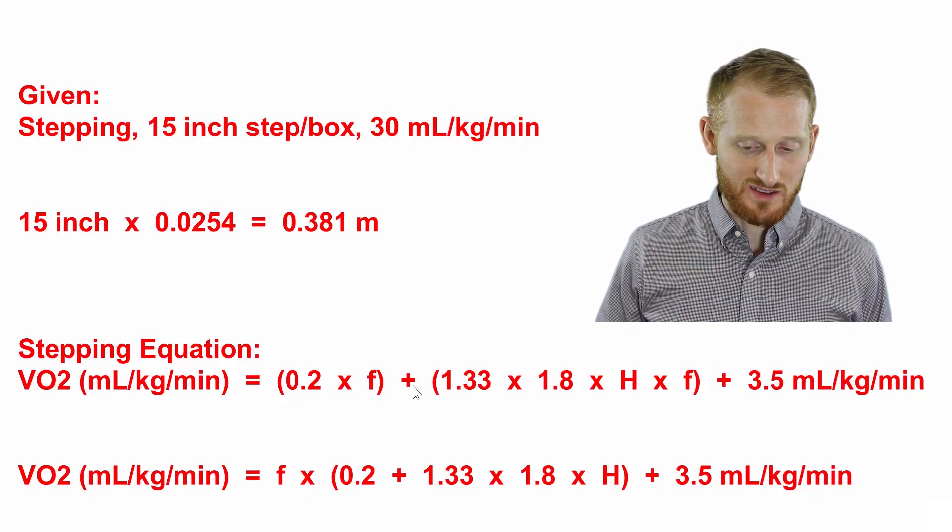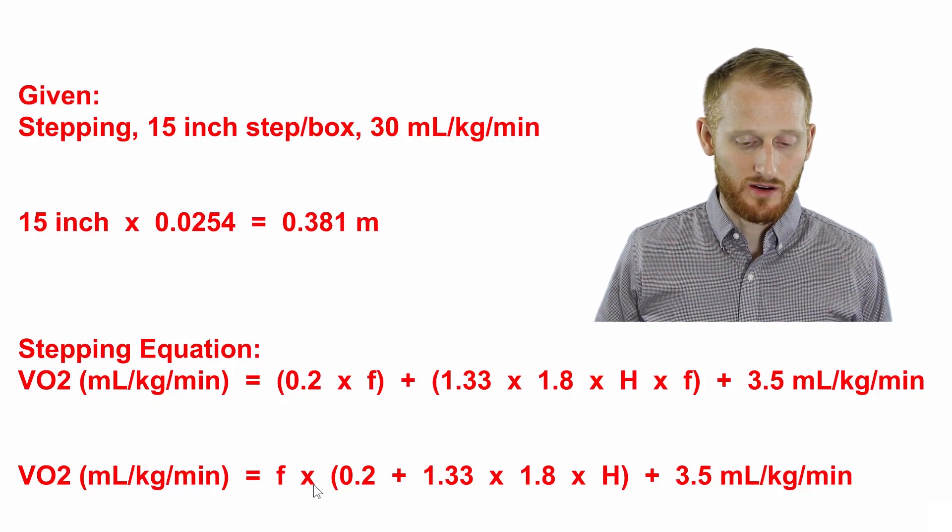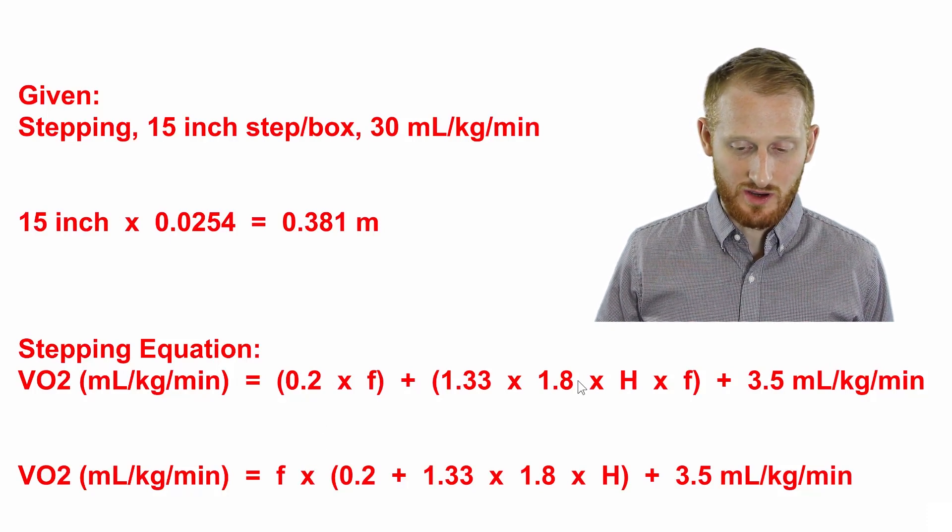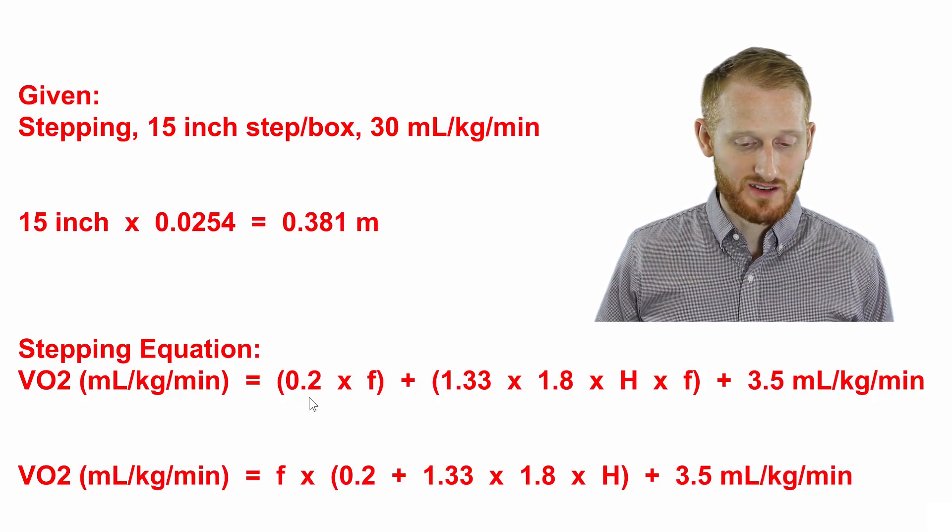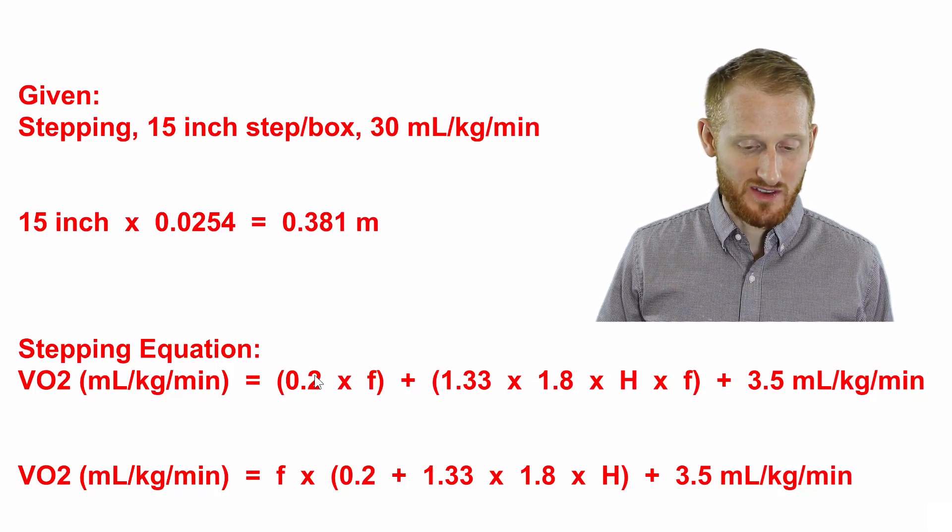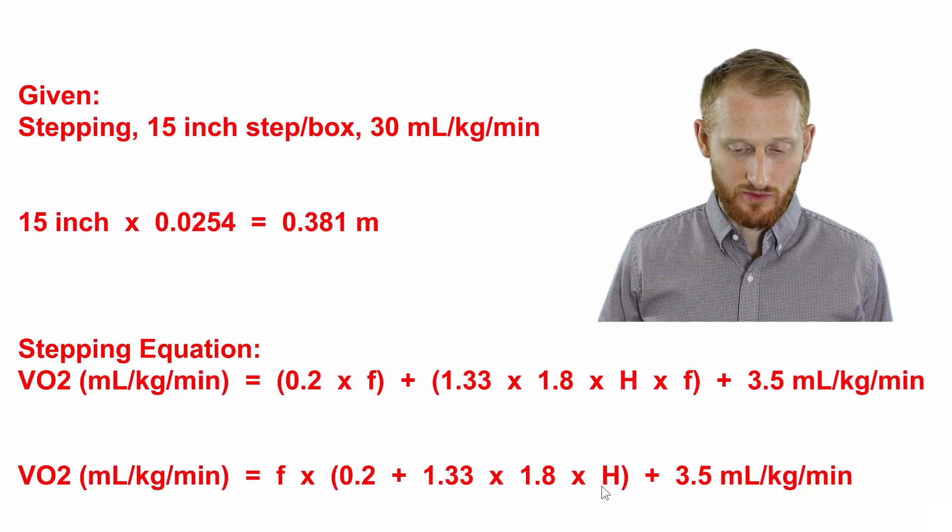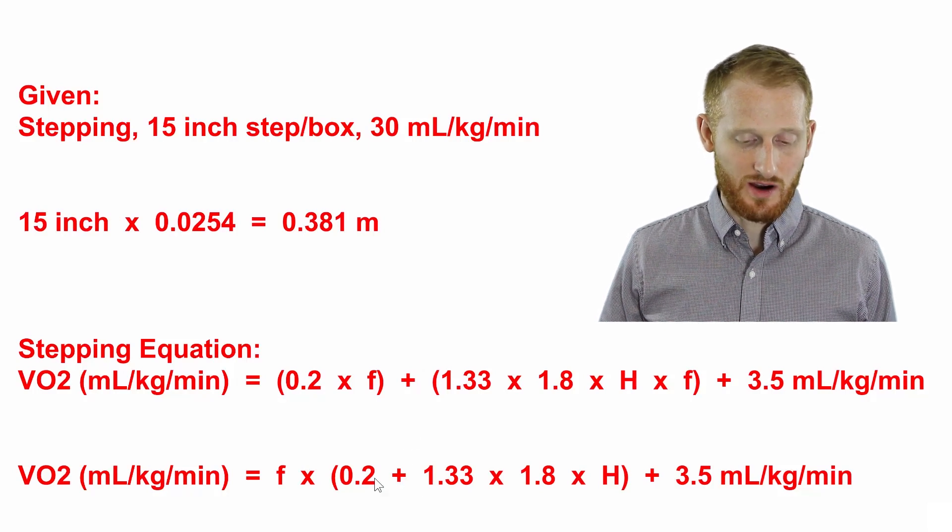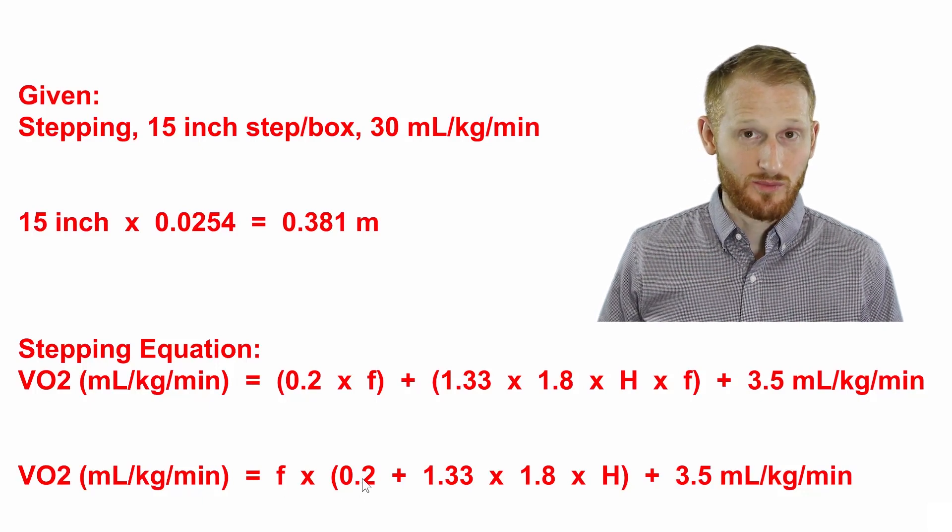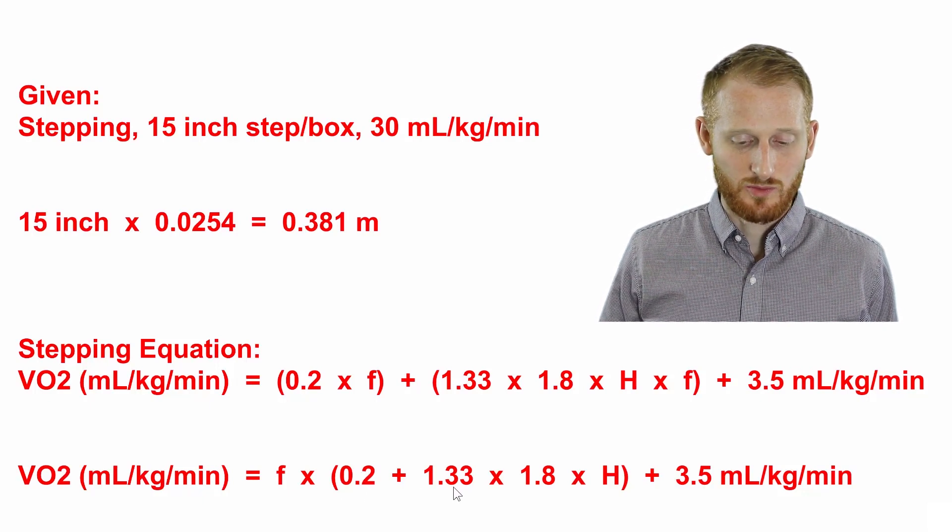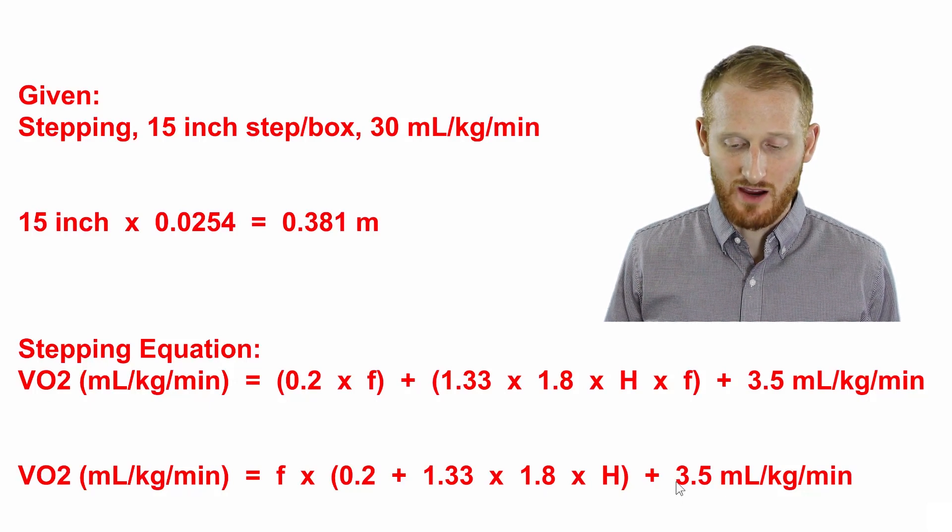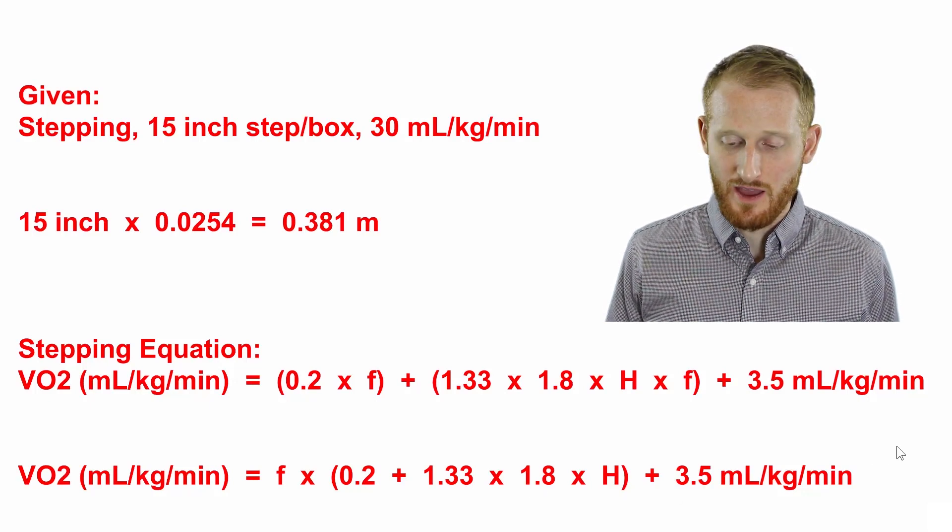When we pull the f's out of both of those sets of parentheses, we can actually combine it into a single f, and we can also combine these parentheses. So we end up with the frequency times, in parentheses, 0.2 plus 1.33 times 1.8 times the height, and we still have the plus 3.5 at the end.